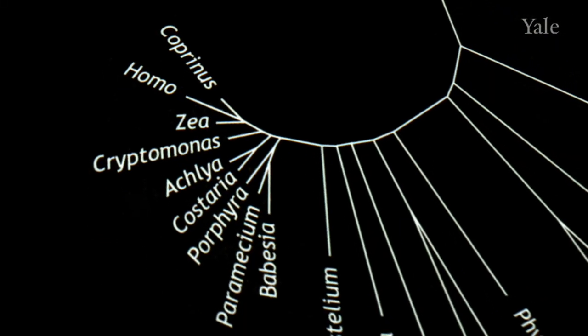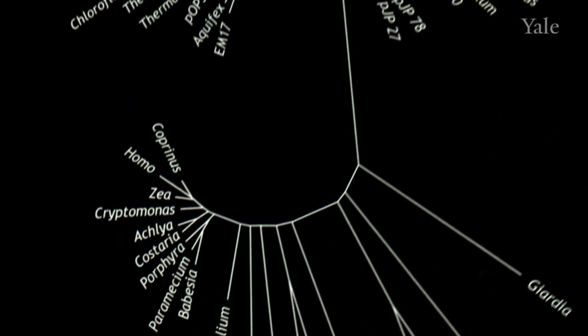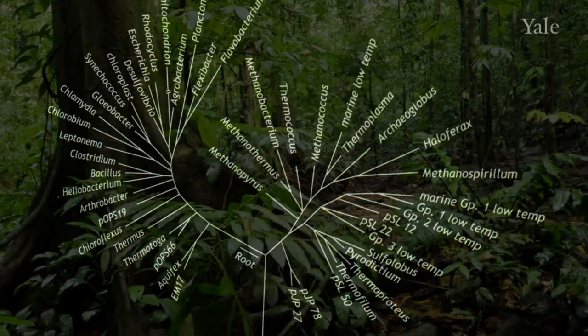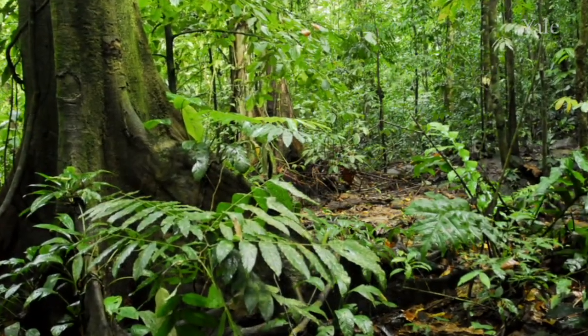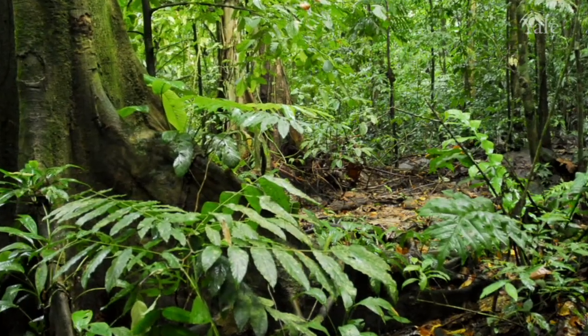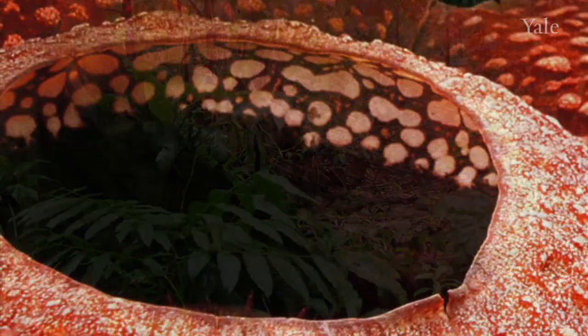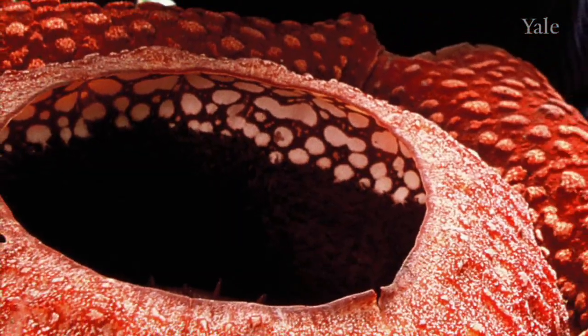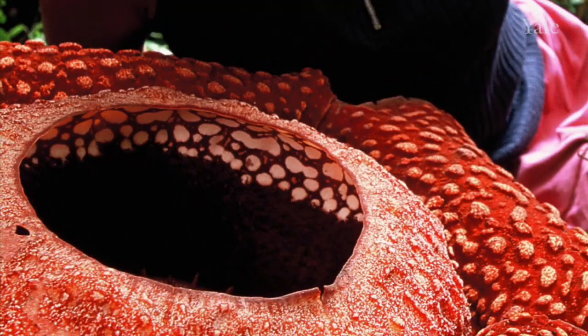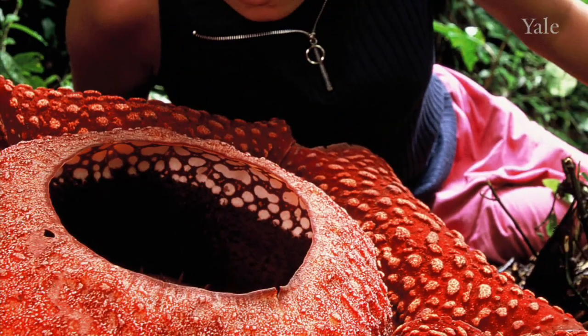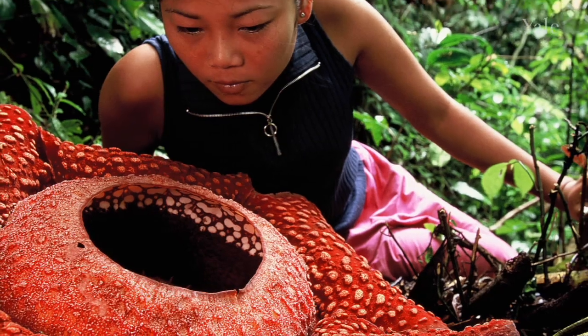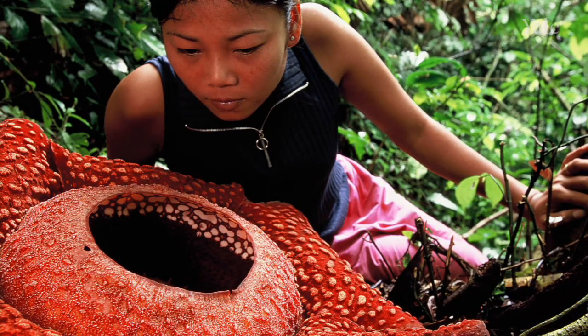Many surprises have emerged from the phylogenetic analysis of molecular information. One of the most unexpected recent findings concerns an unusual parasitic flowering plant called rafflesia. They're found in Southeast Asia and produce the world's largest flowers. The biggest of them is about three feet in diameter, weighs more than 20 pounds, and looks and smells like rotting flesh.